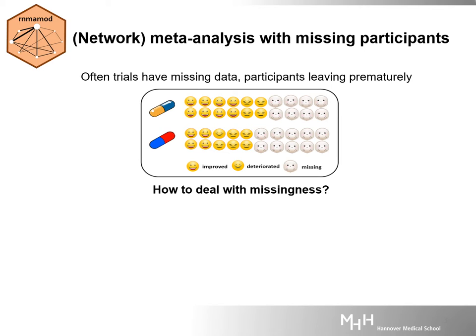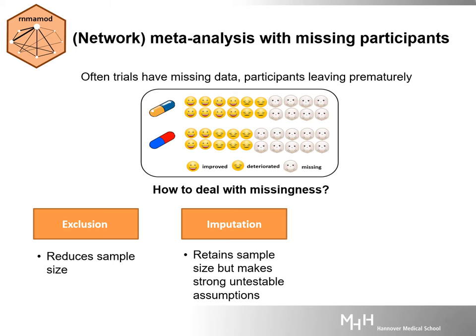Missing data are widespread in clinical trials where participants often leave the trial early for reasons relevant or not to the conduct of the trial. There are three key approaches in handling missing outcomes at clinical trial level, which can also be used at evidence synthesis level: exclusion, which deletes any participants from the sample when outcomes are missing; and imputation, which maintains the sample size by making some assumptions about the missing outcome and taking these assumptions for granted.